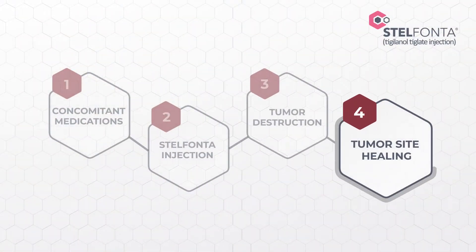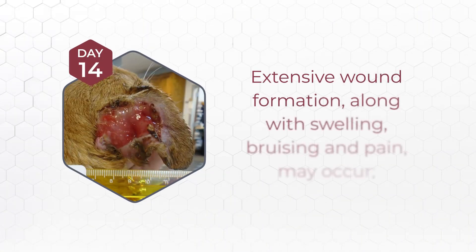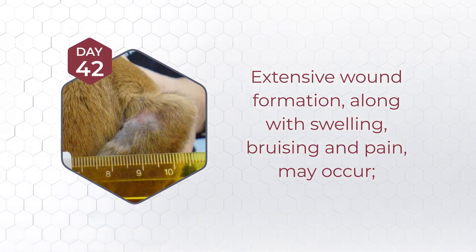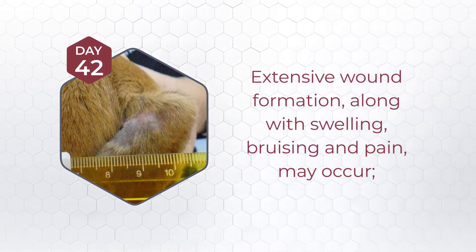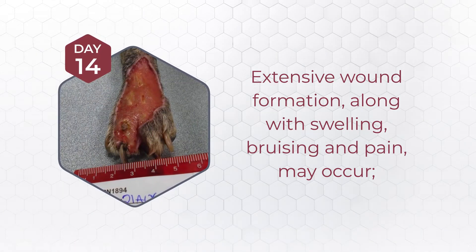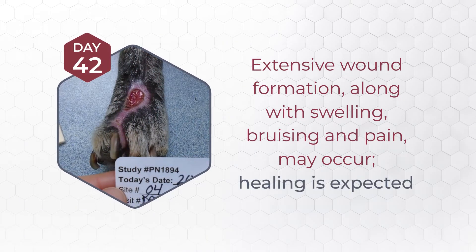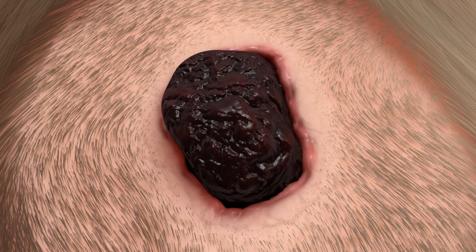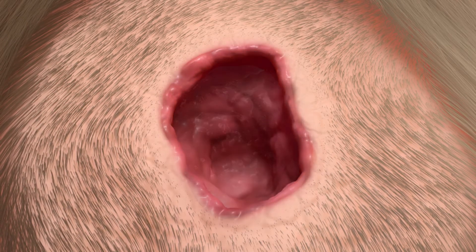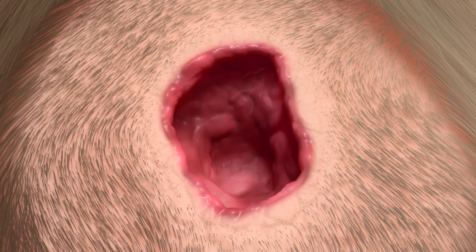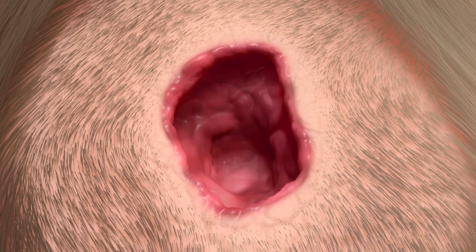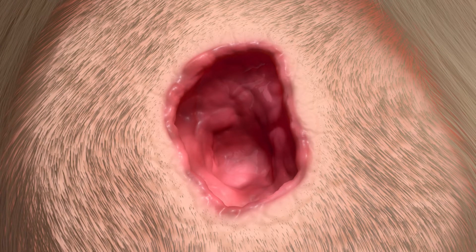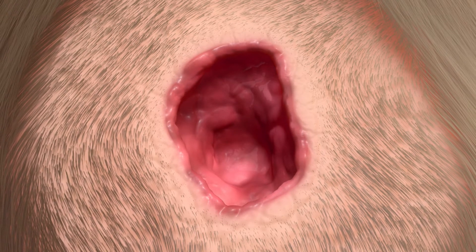Tumor Site Healing: Formation of wounds, possibly extensive, is an intended and likely response, along with associated swelling, bruising, and pain. These wounds are expected to heal. Typically, after a week, the necrotic tumor sloughs off and healthy granulation tissue lines the deficit at the tumor site. Occasionally, tissue sloughing may be severe, requiring additional treatment and prolonged recovery times.